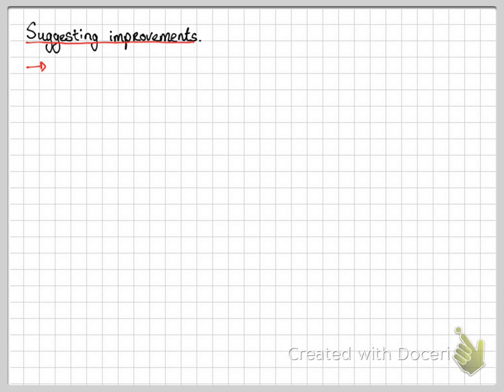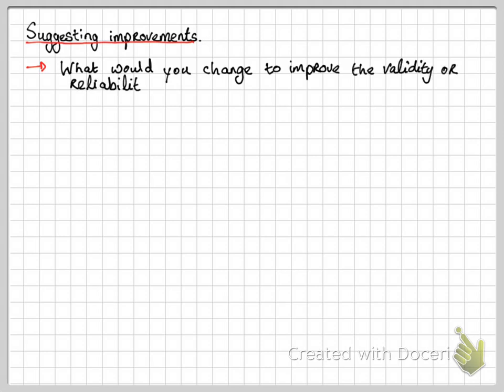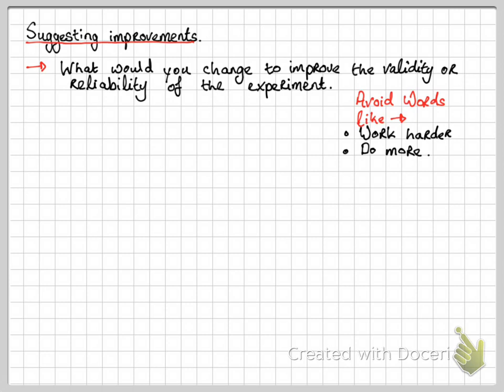Finally, you should look at suggesting improvements. So what would you do now to change the experiment to make it more valid or make it more reliable? Avoid words like the following: 'work harder' or 'do more.' These are not very scientific terms and they're not specific enough. This part of suggesting improvements may require some additional research, so you might need to look at alternative ways of doing the exact same experiment that might be a little bit more reliable or valid. Once you have all these areas complete, you will have completed Criteria C.